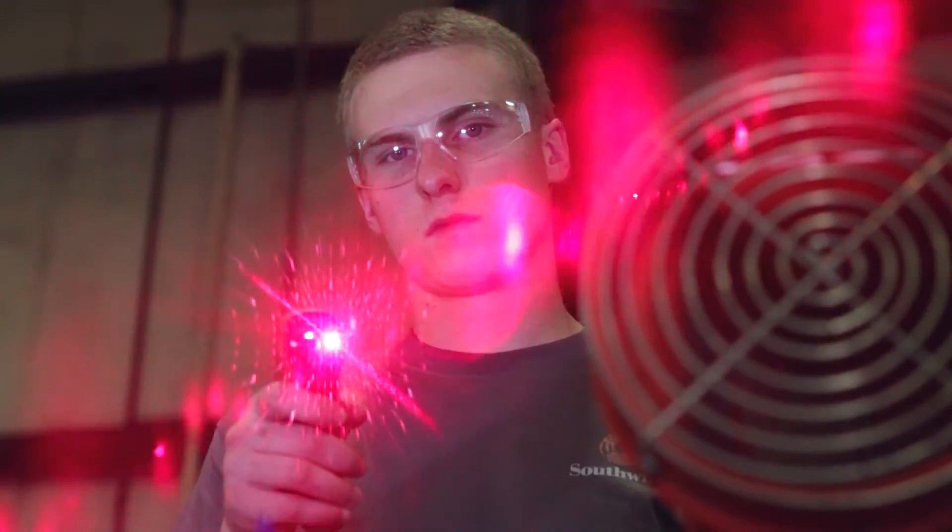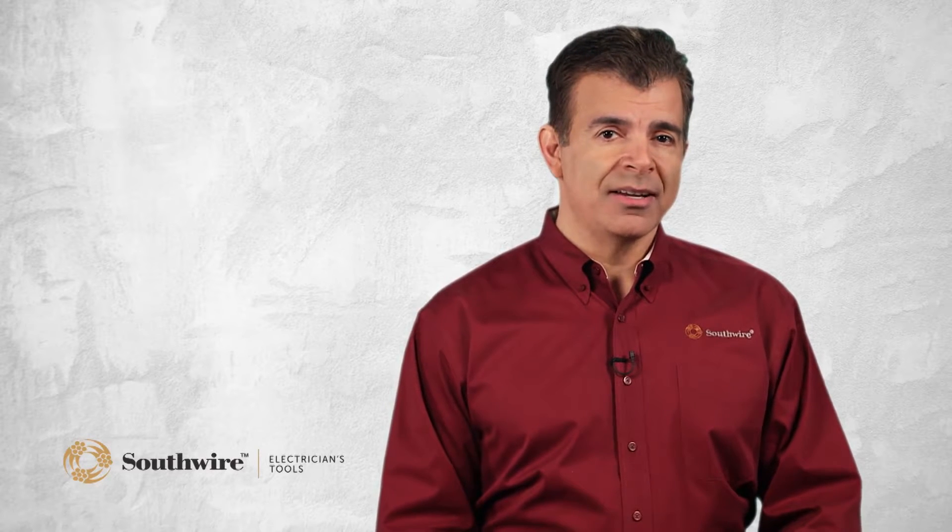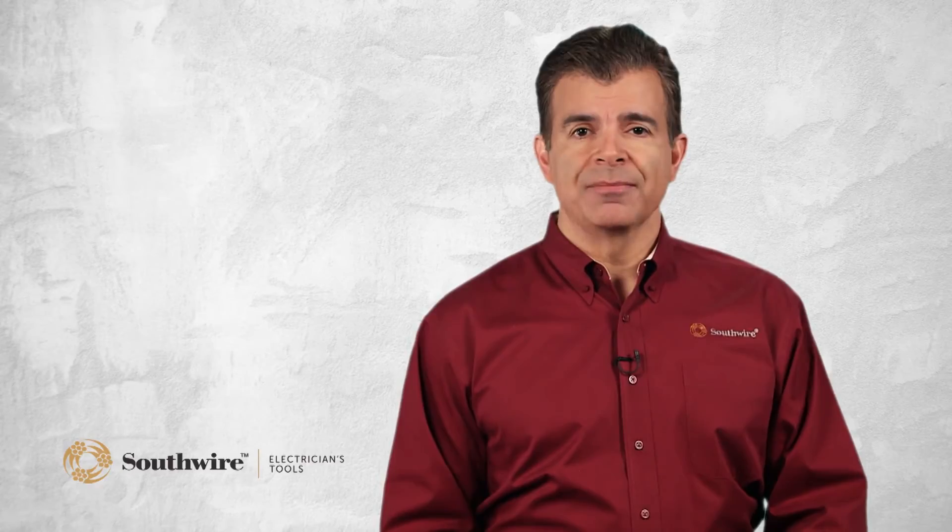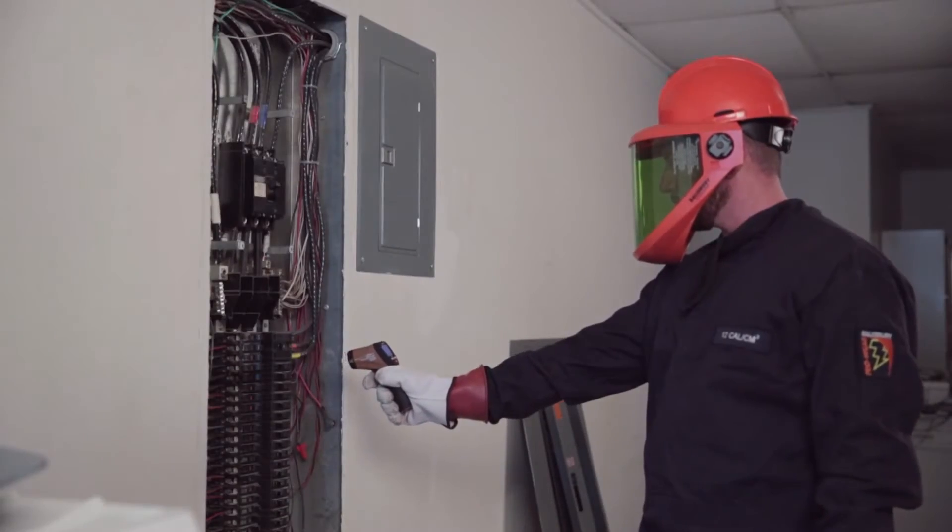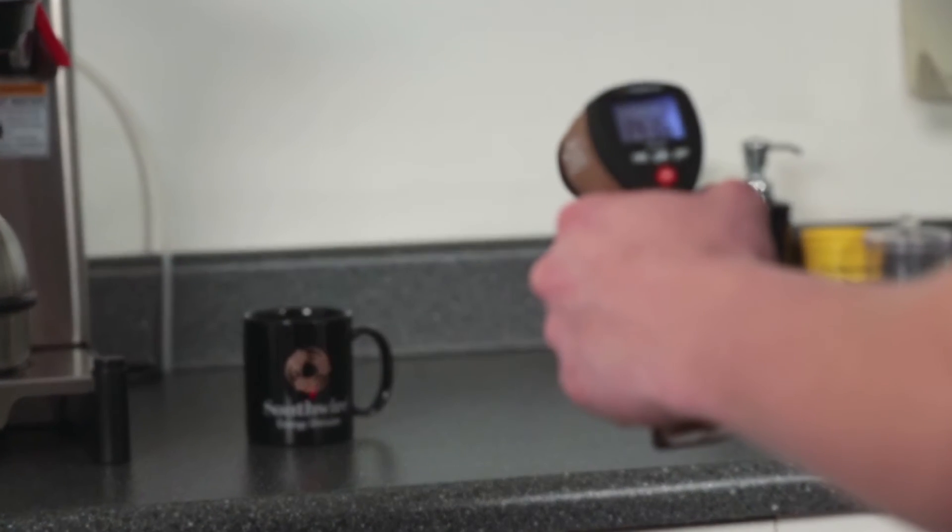There are many advantages to using an IR thermometer. Since infrared energy travels at the speed of light, you get instant readings. You can measure objects that are hard to reach or that are in motion. You can measure at a safe distance when testing live electrical circuits or objects that are too hot to touch.